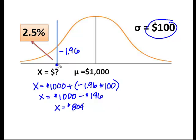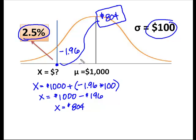So what I know is that 2.5% of Wanda's employees make less than $804, which puts them in the lowest 2.5% of her employees' wages, and that those people are going to get a bonus. So this is truly the maximum amount you can earn and still be in the lowest 2.5%.